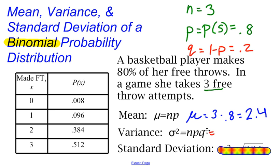So here, the variance would be 3 times 0.8 times 0.2, and 3 times 0.8 times 0.2 gives me 0.48. That would be the variance of this distribution.